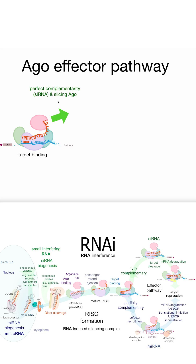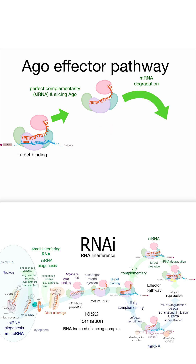When you design siRNAs, you typically make it so that you have extensive complementarity that leads to slicing of the target by Argonaute itself, which exposes ends for exonuclease chewing, preventing protein from being made.